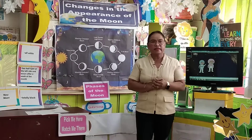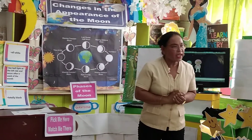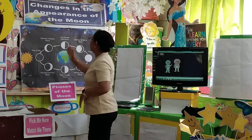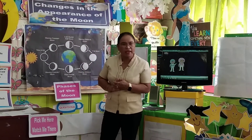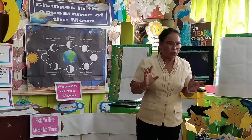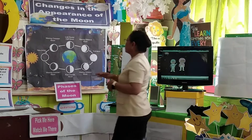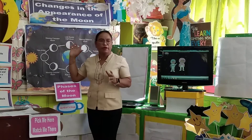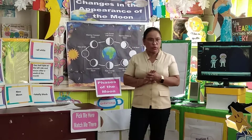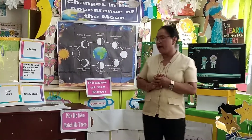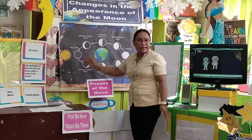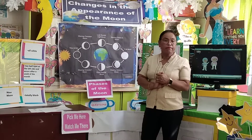And the last phase is the waning crescent — it's getting smaller and smaller. After the waning crescent, the moon will go back to new moon again. So this is the complete cycle of the moon — the movement from waxing to waning causes the changes in the appearance of the moon.